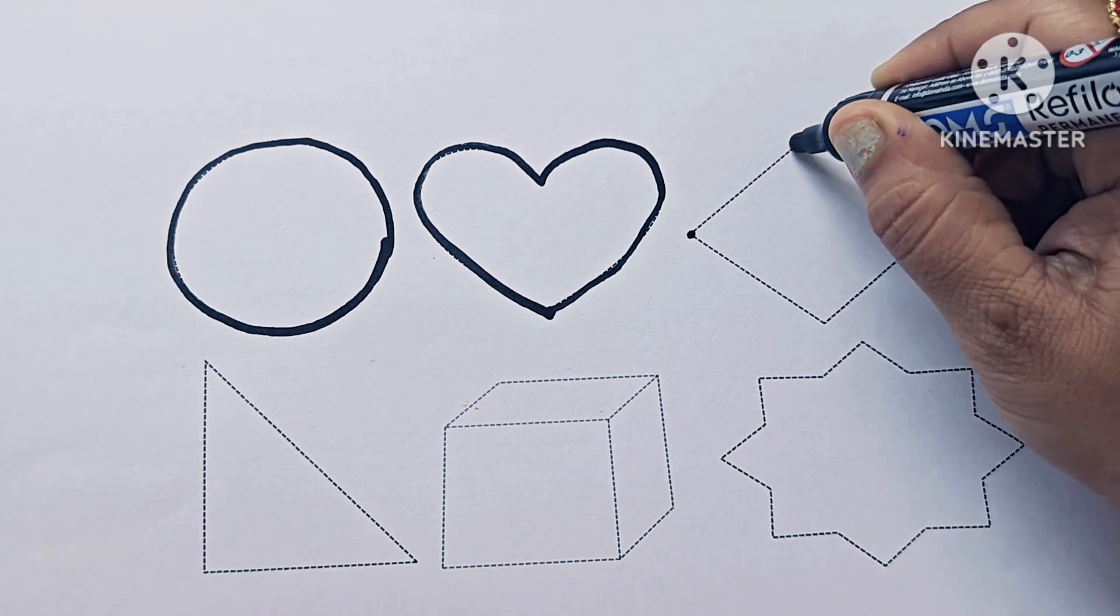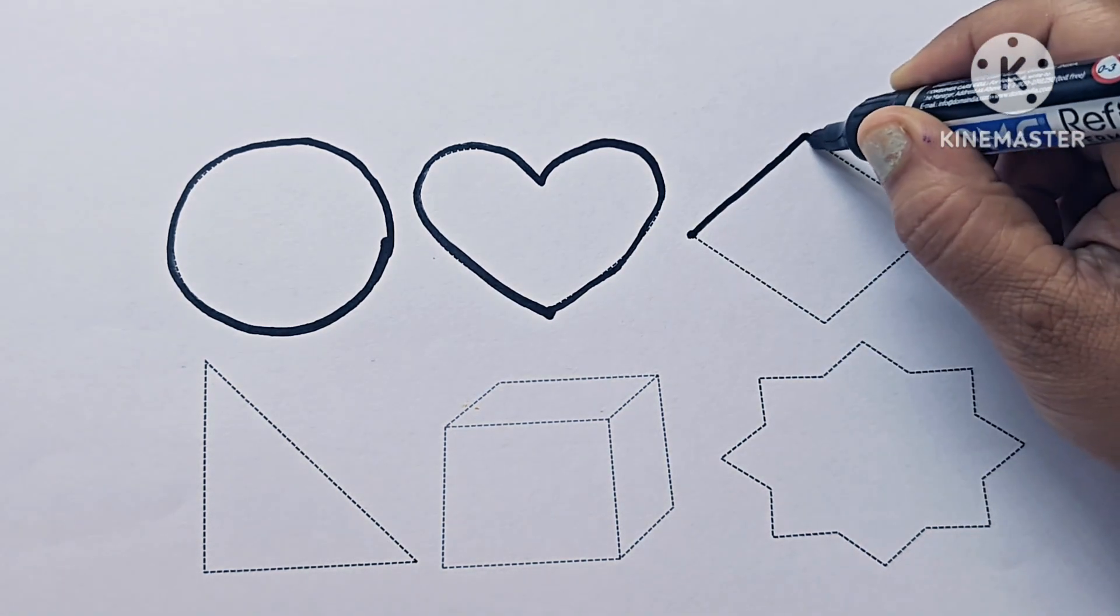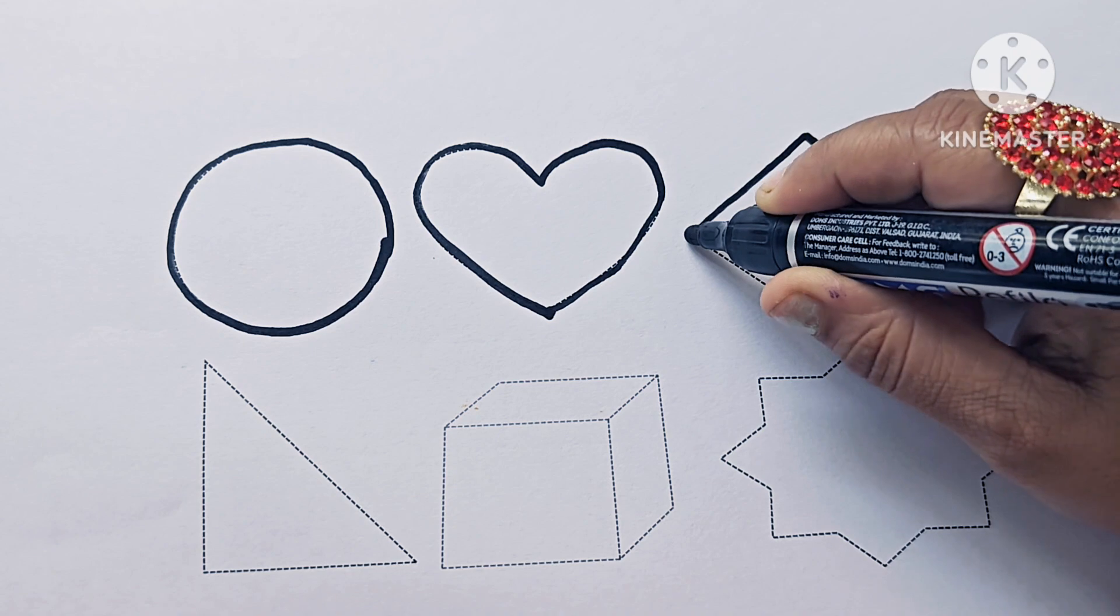This is rhombus, or you can say diamond. It has four sides, four vertices, four angles. It is a 2D shape.